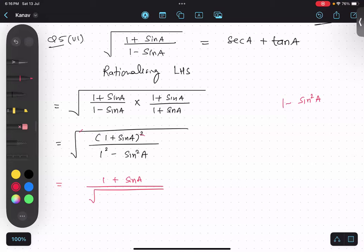So we need to use the identity. In place of one, I will put sine square A plus cosine square A. That is the easiest way.